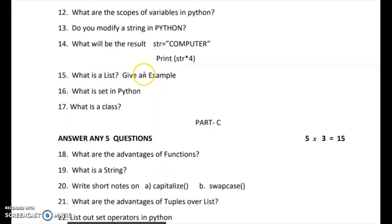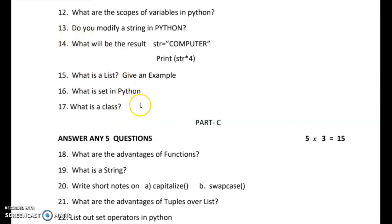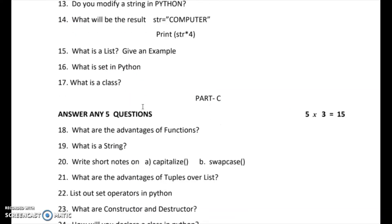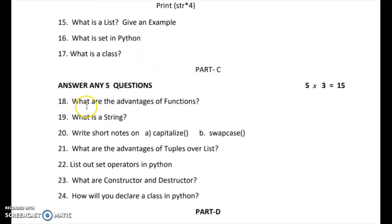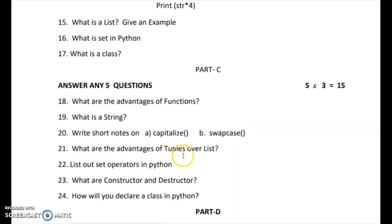Question 15: what is a list? Give an example. Question 16: what is a set in Python? Question 17: what is a class? These are unit test questions — answer any 5. The 3-mark questions include: what are the advantages of functions, what is a string, write short notes on capitalize and swap case, what are the advantages of tuples over lists, list the set operators in Python, what are constructor and destructor, and how will you declare a class in Python?